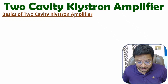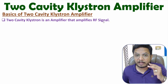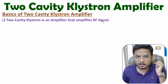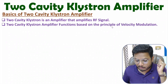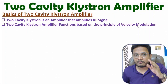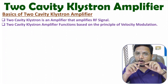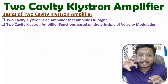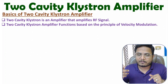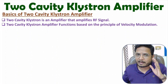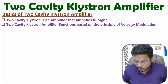The two-cavity klystron is an amplifier used to amplify RF or microwave signals. That amplification is done using the principle of velocity modulation, where we modulate the velocity of electrons. By having modulation of the velocity of electrons, we generate an electron bunch, and based on that electron bunch, we can amplify the signal. Amplification of RF signal is done based on the principle of velocity modulation.